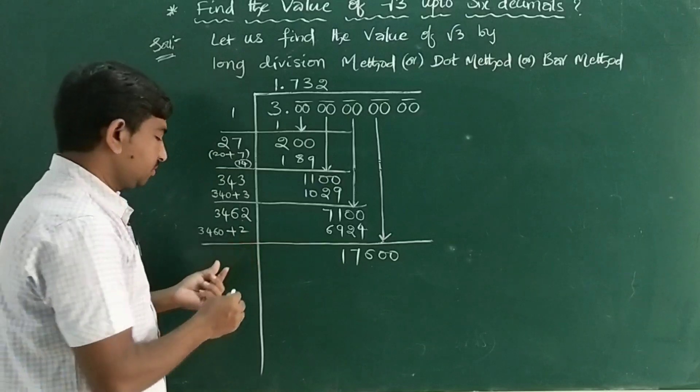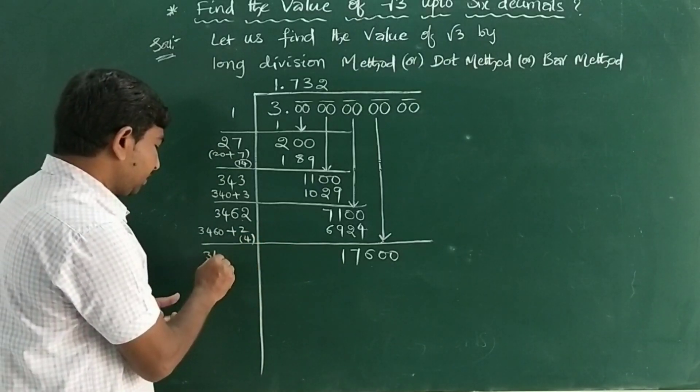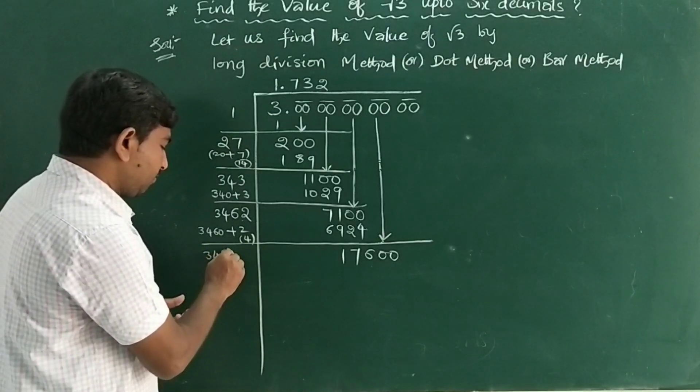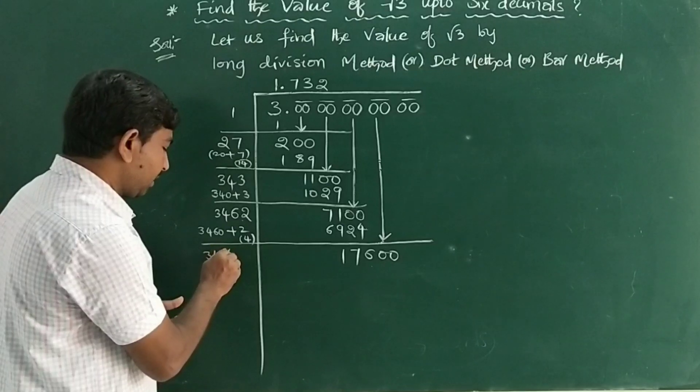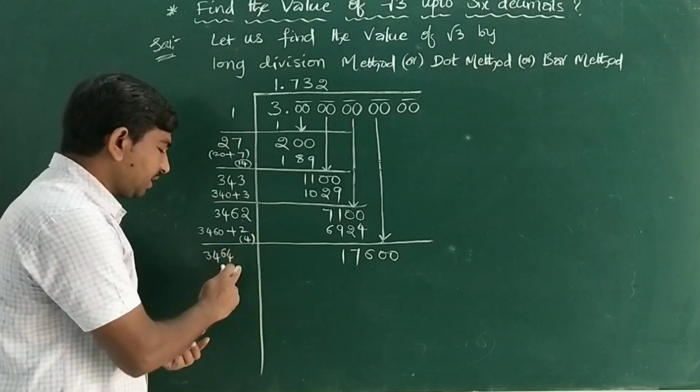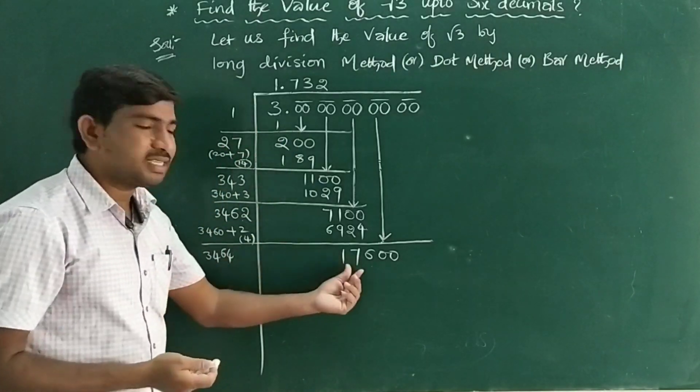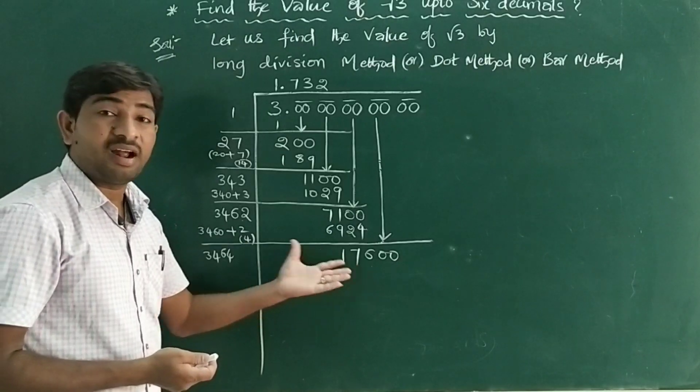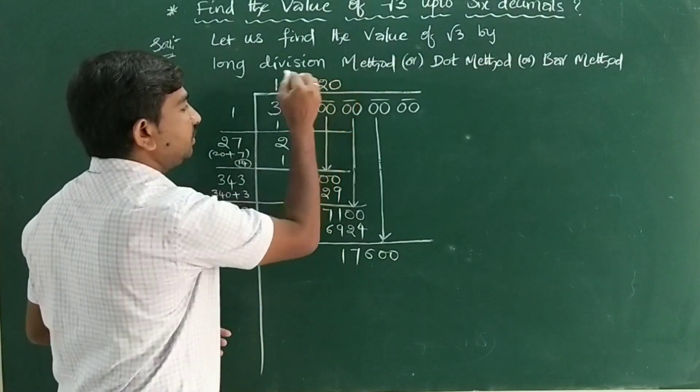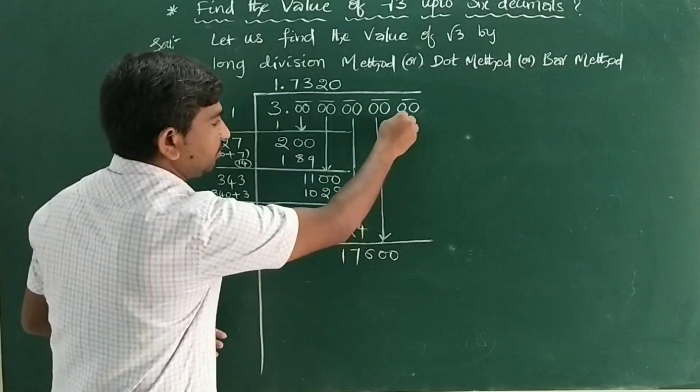3464. If you write any number beside this, it becomes 34,000-something, which is more than 17,000. So it is not divisible. Keep 0 here and also 0 in the quotient. Take one more pair of zeros.